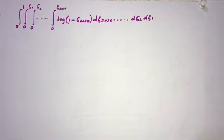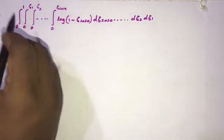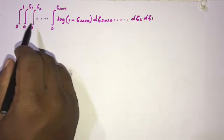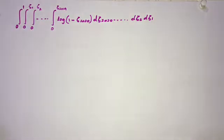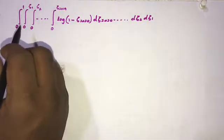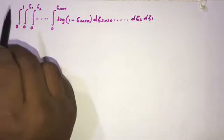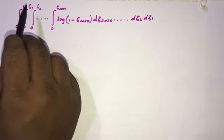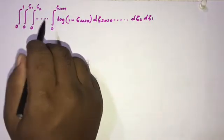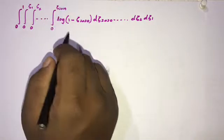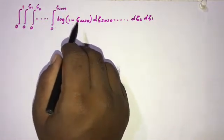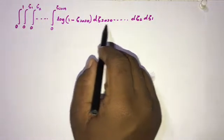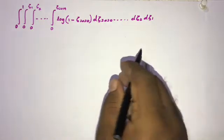Welcome to the mathematics channel. Today we are going to solve another interesting integral: the iterated integral from 0 to 1, from 0 to ζ₁, from 0 to ζ₂, continuing down to the integral from 0 to ζ₂₀₁₉ of log(1 − ζ₂₀₂₀) dζ₂₀₂₀ ... dζ₂ dζ₁. Now, how do we begin?